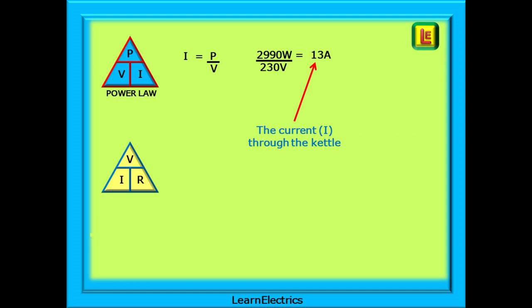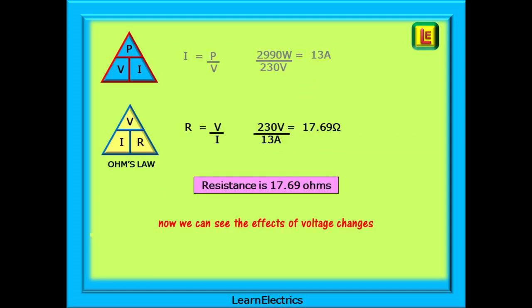We know from the rating plate that the power is 2,990 watts at 230 volts. Power Law tells us that 2,990 watts divided by 230 volts gives a current of 13 amps through the kettle. Now that we have the current, we can use Ohm's Law: 230 volts divided by 13 amps gives us 17.69 ohms. This is the fixed resistance that will be used in all the following calculations.